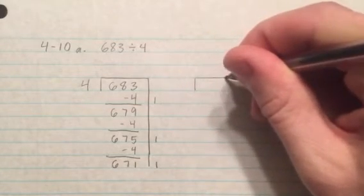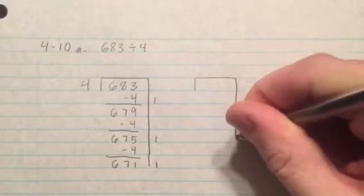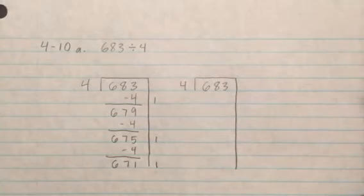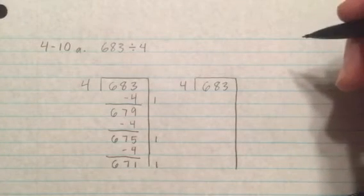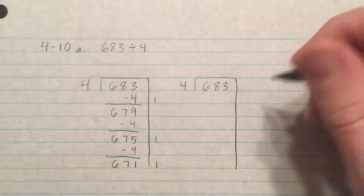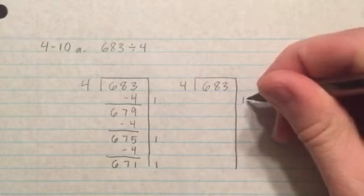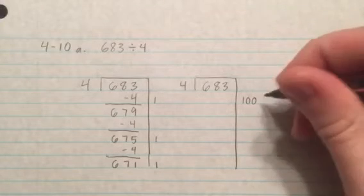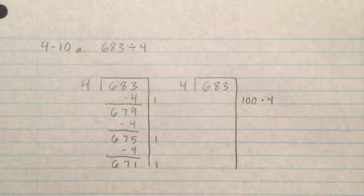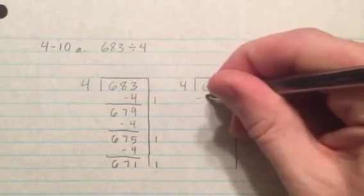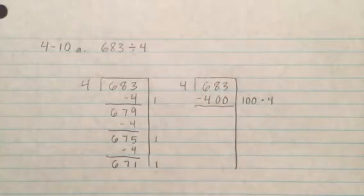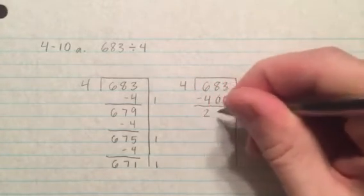I'll redraw my division bracket over here. 683 divided by 4. And this time, instead of taking off just 4 at a time, I might look for a big number of 4's that I could take off. For example, I see here that I could take off 100 groups of 4. So I'm going to write 100 times 4 off to the side here. And if I make 100 stacks of 4, that uses up 400 pennies, which is a lot better than taking off just 4 at a time. So now we get down to 283.